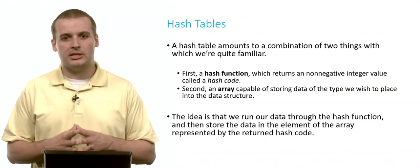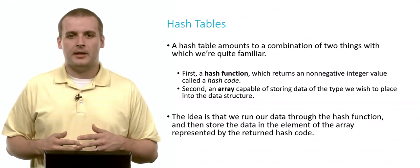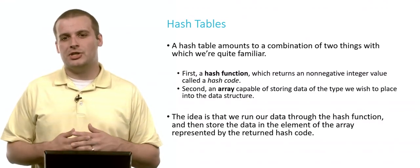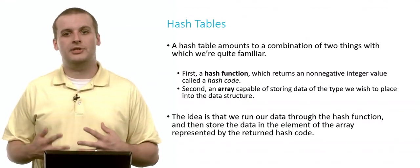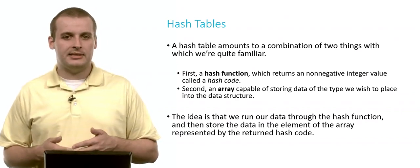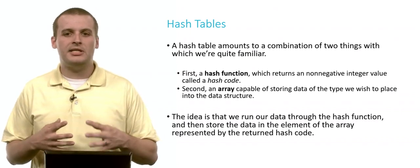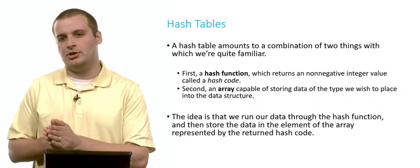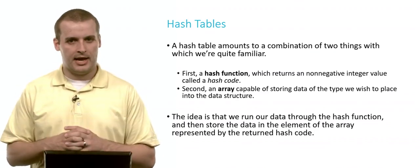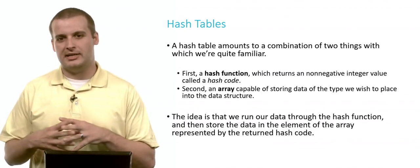So a hash table is a combination of two distinct pieces with which we're familiar. The first is a function, which we usually call a hash function. And that hash function is going to return some non-negative integer, which we usually call a hash code. The second piece is an array, which is capable of storing data of the type we want to place into the data structure.